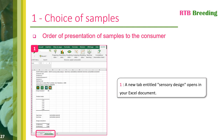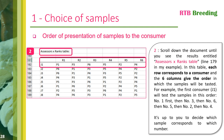A new tab entitled Sensory Design will then open in Excel Stats with the various results. To find out which consumers will be testing which products and in which order, scroll down the page until you see the results entitled Assessors. In this table, each row corresponds to a consumer and the 6 columns give the order in which the samples will be tested. For example, the first consumer G1 will test the samples in this order: number 1 first, then 3, then 6, then 5, then 2, and finally 4. It's up to you to decide which sample corresponds to which number. Thanks to this table, you know in which order to present the 6 samples to your 125 consumers.